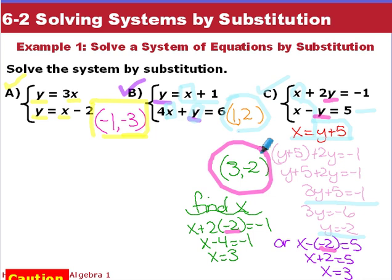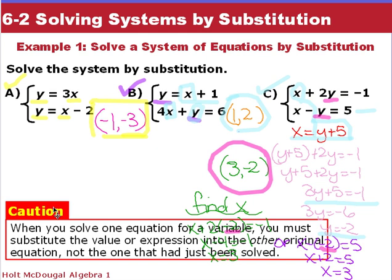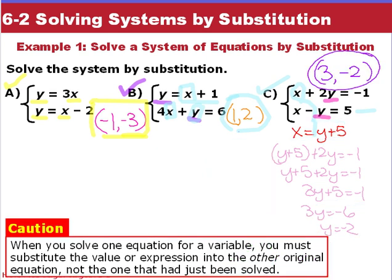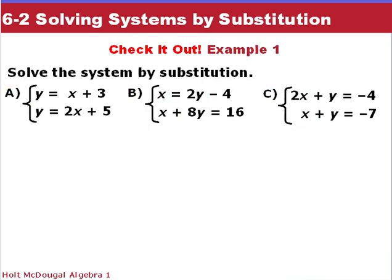So remember when you solve one equation for a variable, you must substitute the value or expression to the other original equation, not the one that you just had just solved. So you're going back to the original one and substituting to the other original one. Here you have three check it out. Solve, make sure the first one's already solved for y. Second one, we have solved for x. And the third one, we have to either solve for x or y. It's your choice. Pick which one you want to solve for.